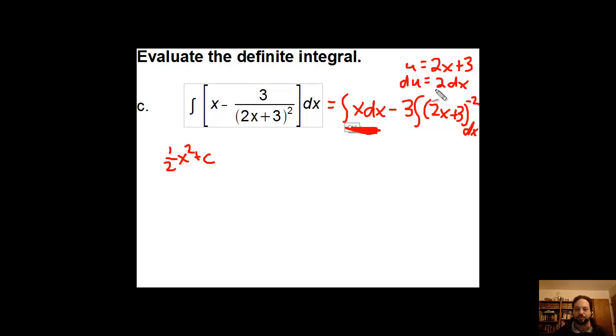That's going to be an issue. To handle that, I'm just going to stick a 2 out the front and divide by 2 here to balance out. Now I do have my u and there's my du, the 2 dx. I'm going to have minus 3 halves the integral of u to the negative 2 du.